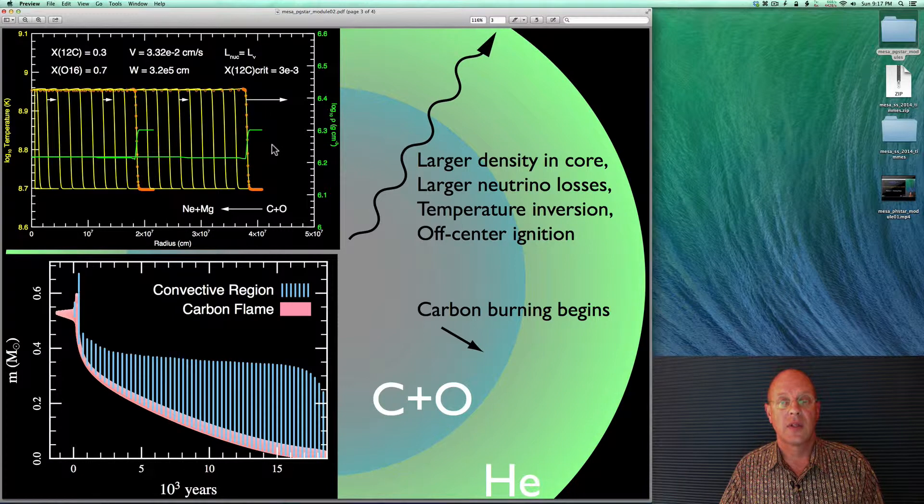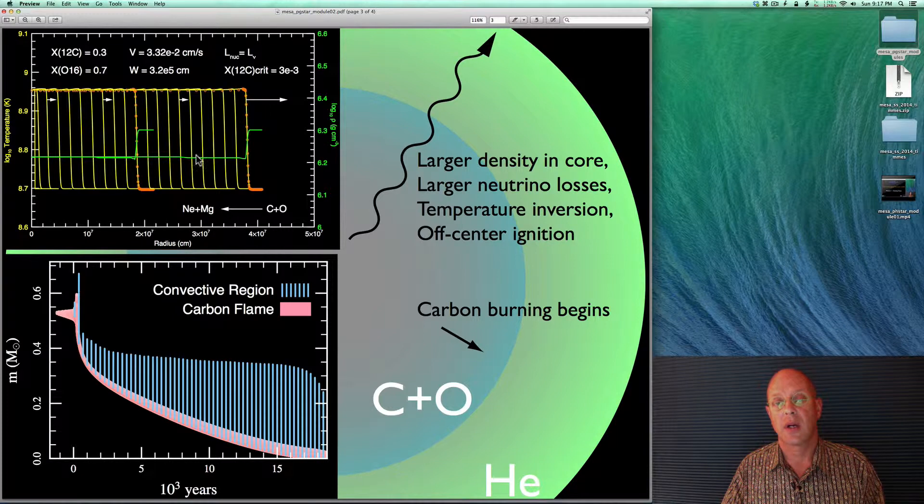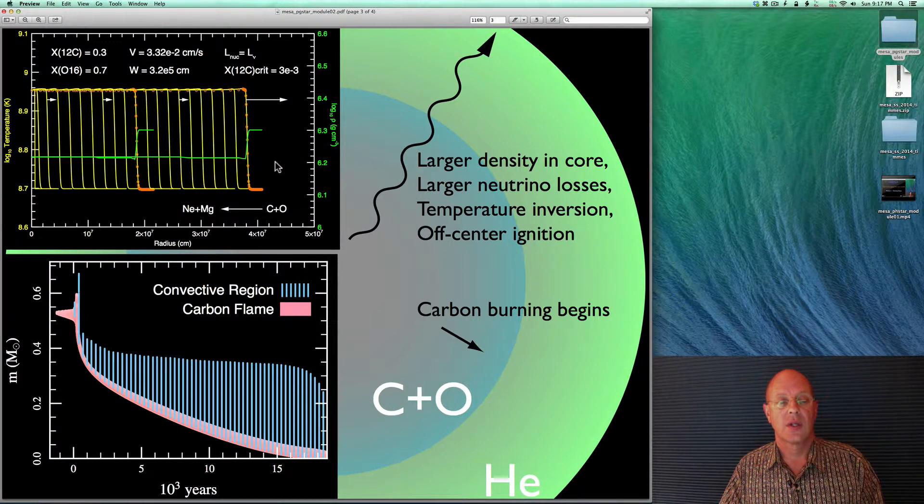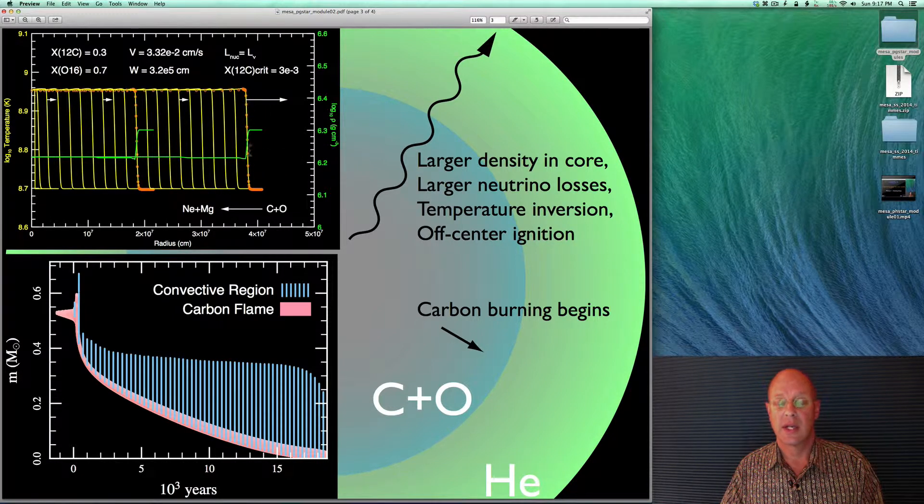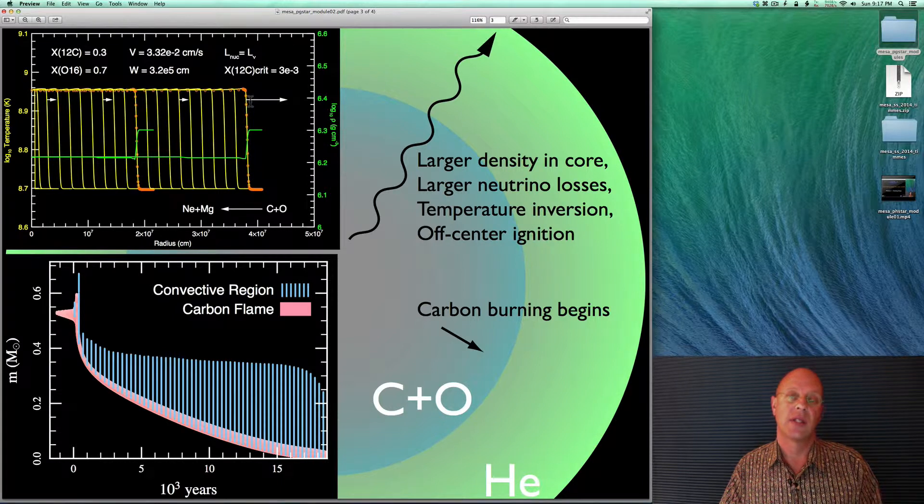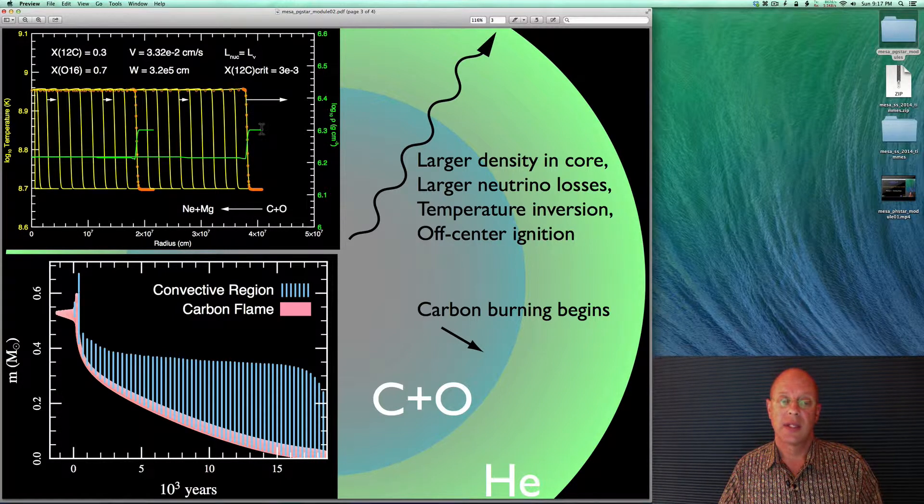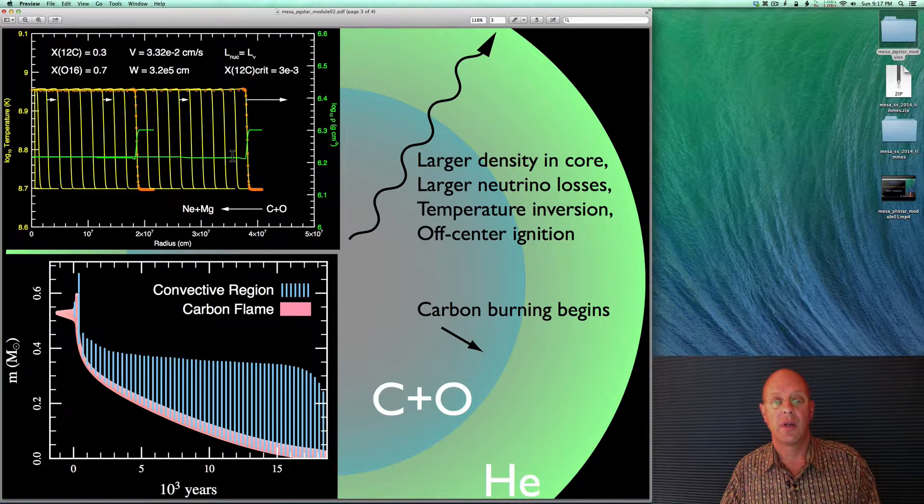And so, each of these yellow lines is a snapshot in time as this flame propagates. The green is the density, on the right-hand axis. And these are very subsonic. They're very slow flames. And so, the pressure is basically isobaric across the flame front. And so, as heat, as energy leaks out, and it begins to heat material, the temperature rises as burning takes over. And as the temperature rises, for a constant pressure, the density must drop behind the flame front.